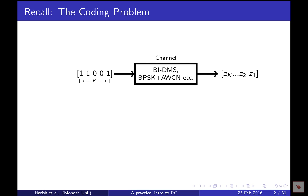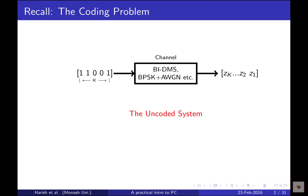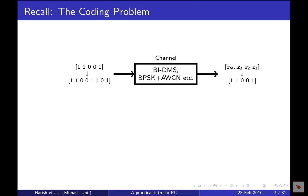If you consider k bits as a block, in an uncoded system you transmit those k bits directly through the channel and receive k noisy versions. This is a fixed system with no intelligence involved and a fixed performance. Shannon's idea is to improve performance by adding redundancy: we take k bits, convert them into n bits, transmit those n bits instead of the original k message bits, receive the noisy versions of the n coded bits, and estimate the original message.